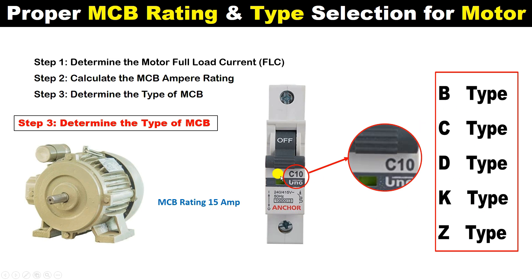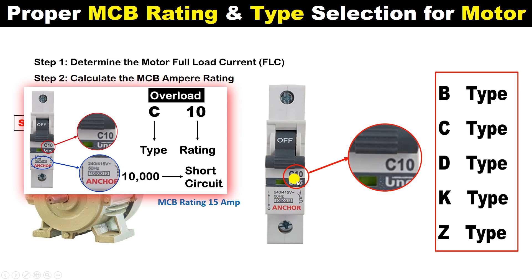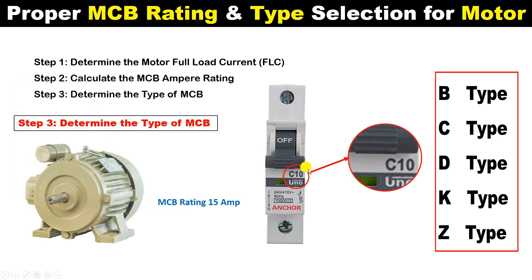If you use an MCB of the wrong type, it will trip again and again or it will never trip, so you have to be careful about the MCB type. Looking at this MCB, you can see it is written C10 — the 10 means the rating of the MCB is 10 ampere, and the C tells you the type. There are 5 types of MCB: B, C, D, K, and Z. All 5 types are used in different places, and the type tells you how quickly the MCB will trip. For a motor, the MCB must be of C type.